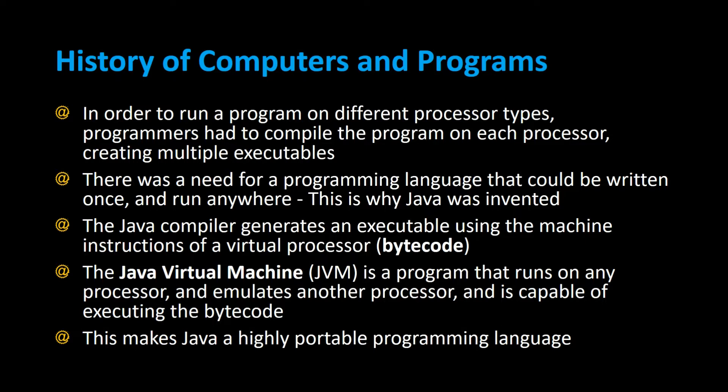The Java compiler creates an executable using the machine instructions of a virtual processor, and this is called bytecode. When you create your Java programs, you're creating the .java file. When you compile it, it creates bytecode, which is the .class file — the executable file that the Java Virtual Machine can run. The JVM emulates a processor and is capable of executing the bytecode, interpreting it and running it anywhere a JVM is installed.